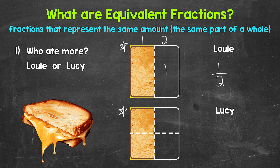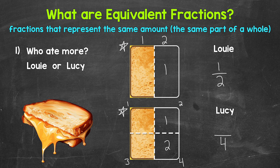Louie ate one half of the grilled cheese. Now let's take a look at Lucy's grilled cheese. What fraction of her grilled cheese was eaten? The whole grilled cheese was divided into four equal pieces, so four is our denominator. Then Lucy ate two of those equal pieces, so two is our numerator. Lucy ate two pieces out of the four total pieces, so our fraction is two fourths. She ate two fourths of the grilled cheese.